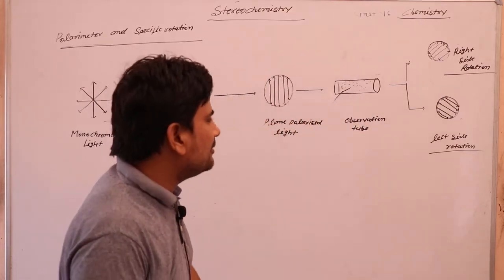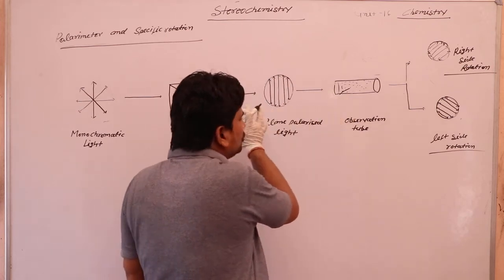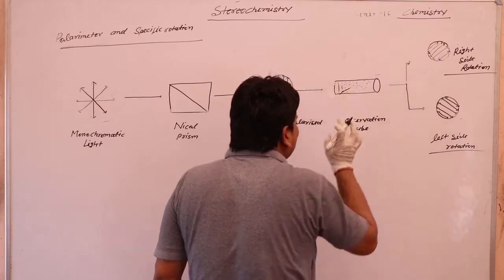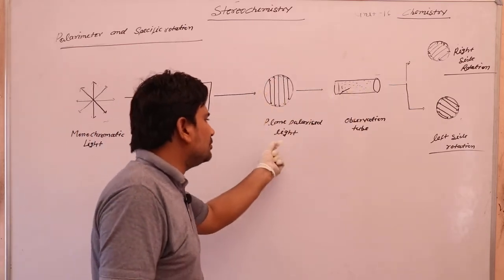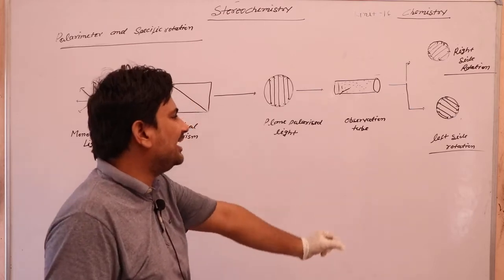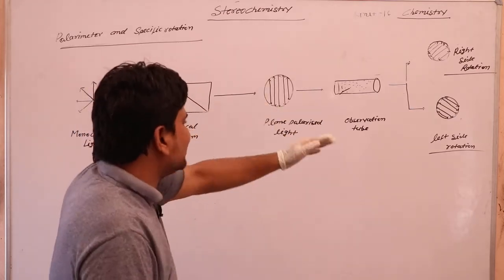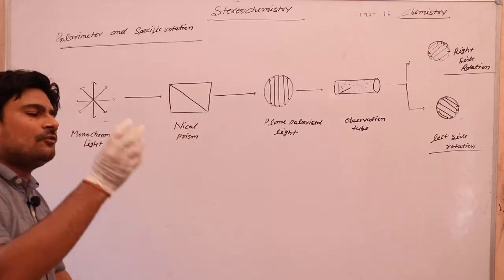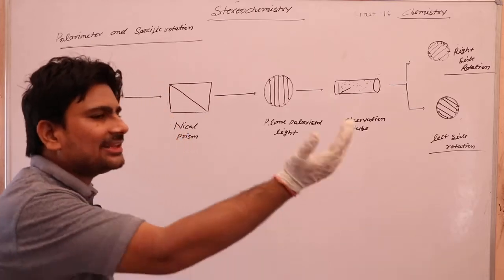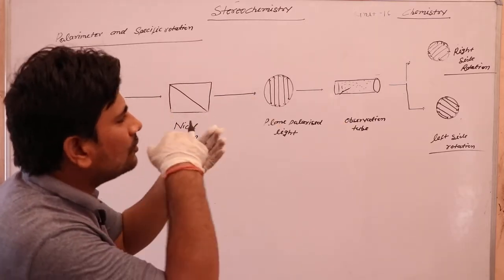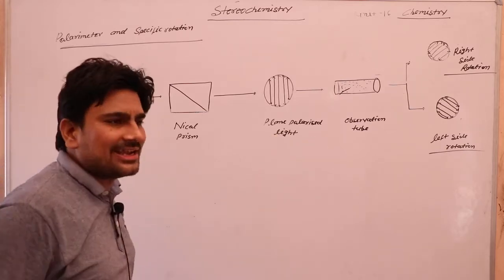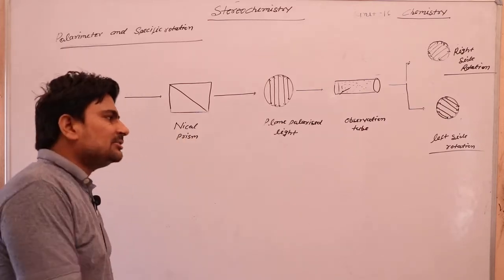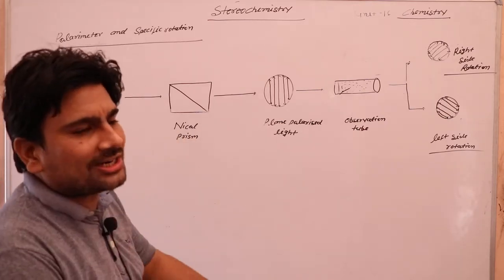The observation tube contains a solution. When plane polarized light passes through this solution, it can rotate to the left side or the right side. Right side rotation is called dextro rotatory and left side rotation is called levo rotatory, as we read in the last video.